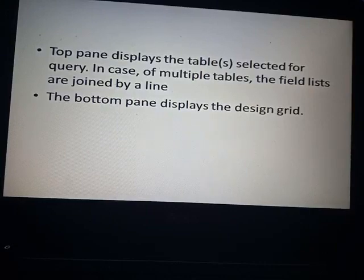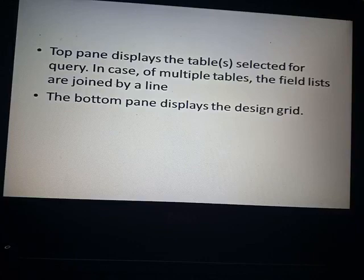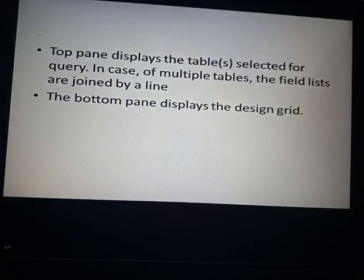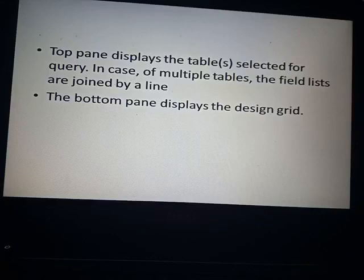The top pane displays the tables selected for the query. In the case of multiple tables, the field lists are joined by a line. You will see the tables you have selected for the query, and if there is more than one table, all fields are shown by a joining line, as demonstrated in previous videos about making relationships between two tables.